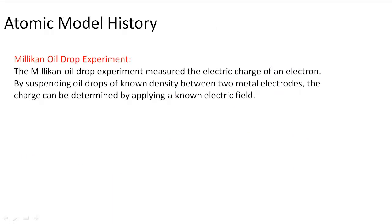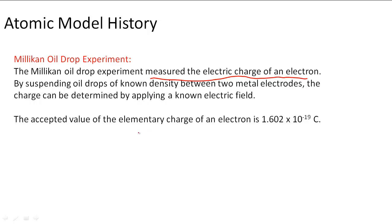The next part of atomic model history is that Millikan did an oil drop experiment. Millikan wanted to find out how much electrical charge an electron had. Thompson found out how many grams it had, but Millikan used his experiments to measure the electrical charge of an atom by suspending two oil drops of known density between two metal cathodes. And what he found was that the elementary charge of an electron is 1.602 times 10 to the negative 19th coulombs, which is an electrical charge unit. So this gives us an idea about how much the charge of an electron really is.